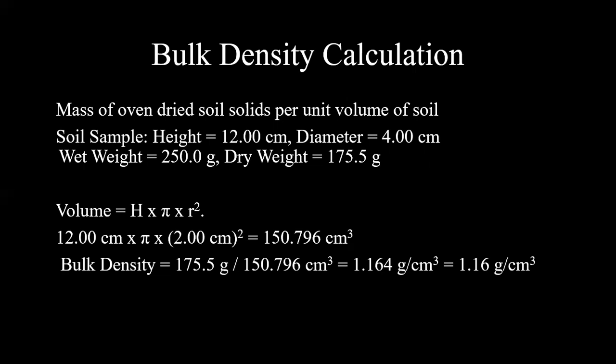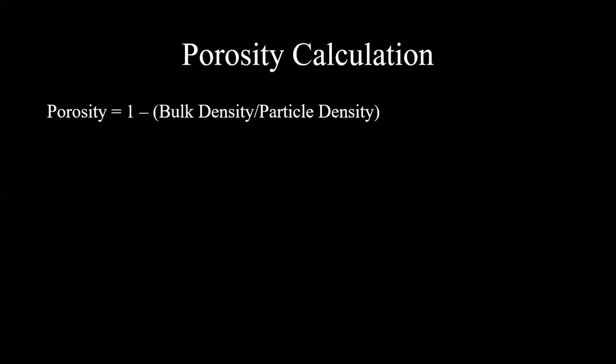To calculate bulk density we take the dry weight divided by the volume, which gives us 1.164 grams per centimeters cubed, or 1.16 grams per centimeters cubed when we take into consideration significant figures.